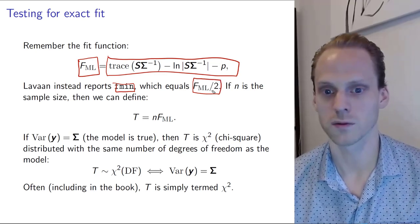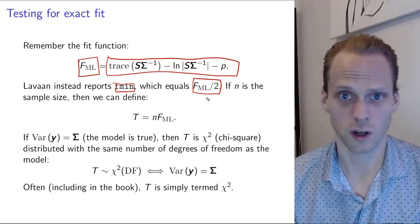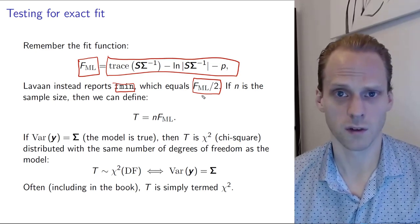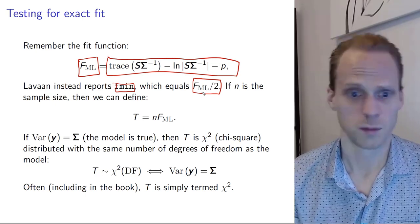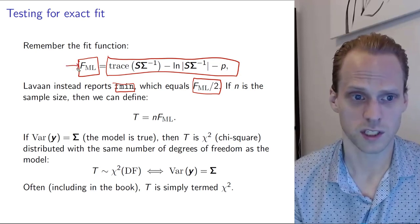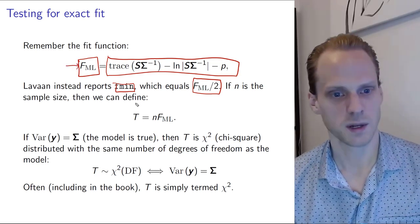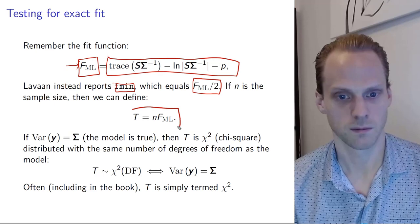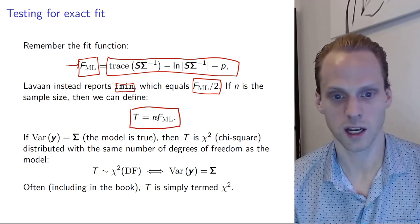In Psychonetrics, as I explained in the more detailed video, I use another function which is not a likelihood ratio but really just a likelihood. LAVAN actually reports something called Fmin which is this but divided by two.